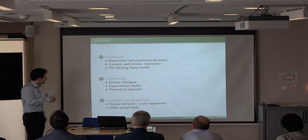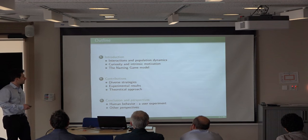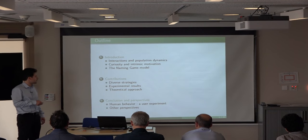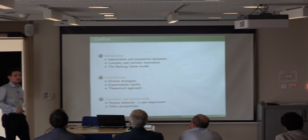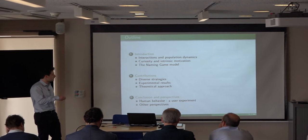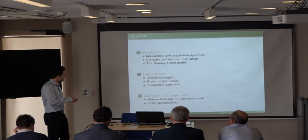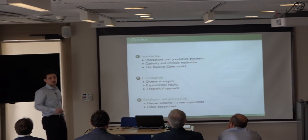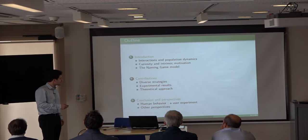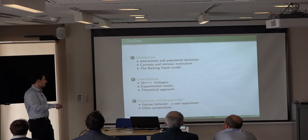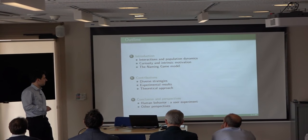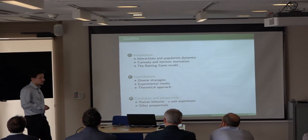The first field is population dynamics and interaction, and the second one is curiosity and intrinsic motivation. We will bring them together using a specific model from the first domain — the naming game model — and introduce a set of mechanisms or policies inspired by work in the second domain. In the second part we will detail the strategies we can use as active mechanisms, analyze the experimental results, and assess the efficiency of those strategies by conducting a theoretical analysis.